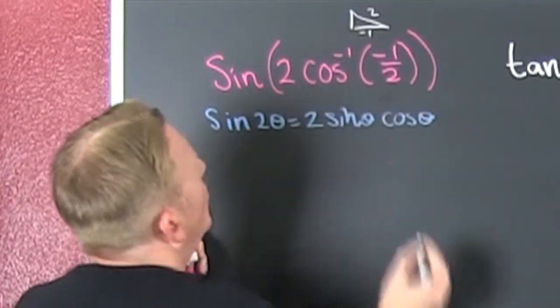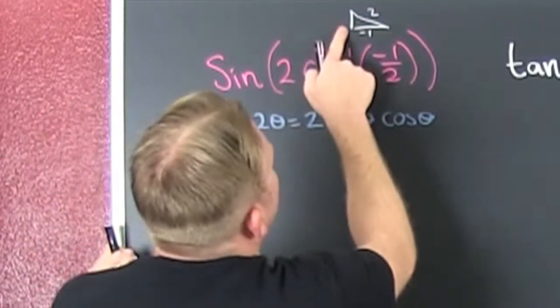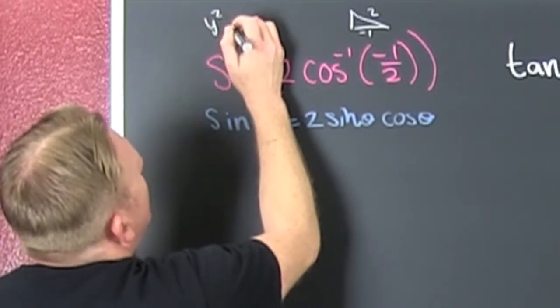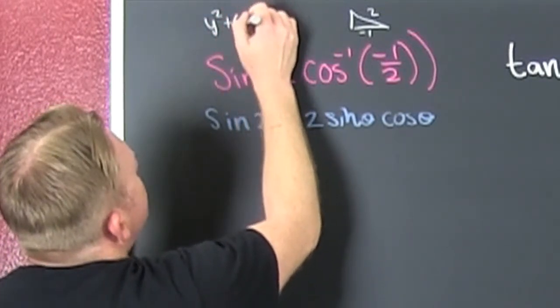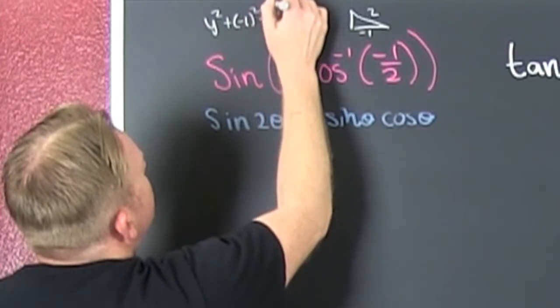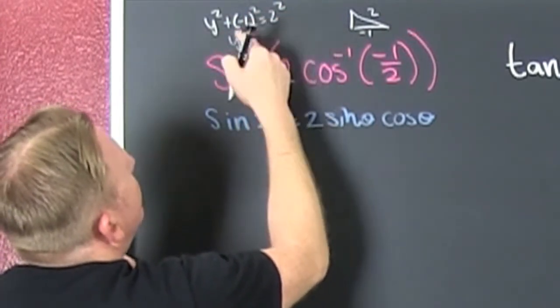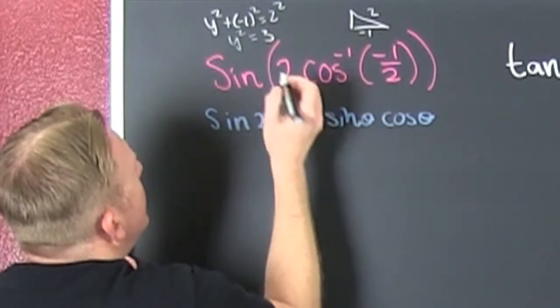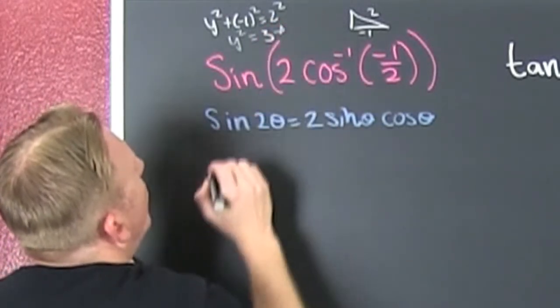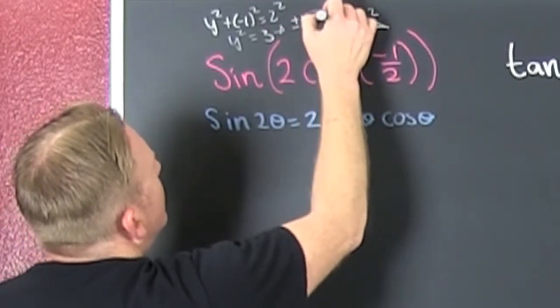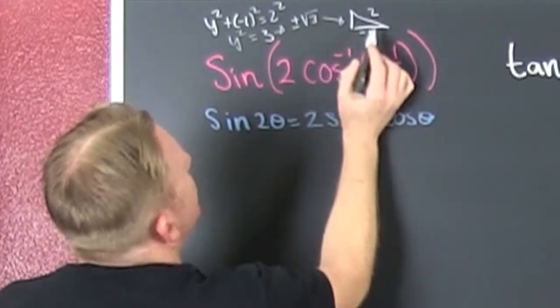The cosine is adjacent over hypotenuse. So, that's a minus 1 and a 2. So, we got to go and we got to get that other side. That y squared plus that minus 1 squared is 2 squared. So, my y squared is, wait for it, 4 minus 1 is 3. So it turns out my y is going to be plus and minus the square root of 3.